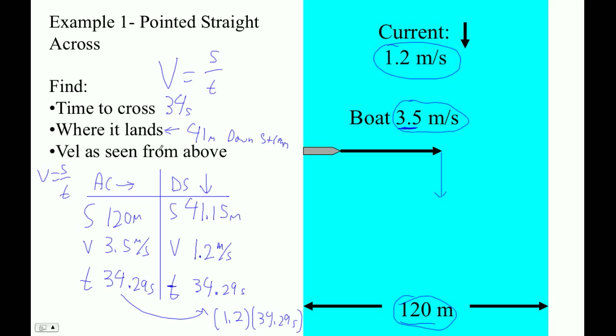The velocity as seen from above, well, that's a little tricky. It's 3.5 across and 1.2 down. So we could write the velocity two different ways. We could say it's 3.5 meters per second in the across direction, plus 1.2 meters per second in the downstream direction. As long as you know which way that is, we're good.